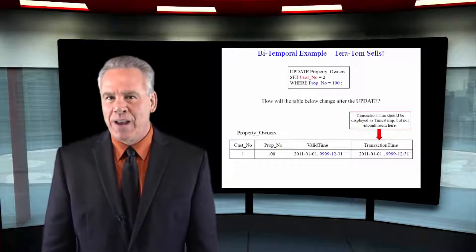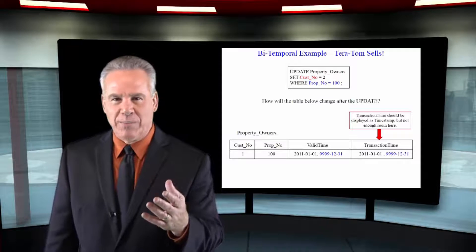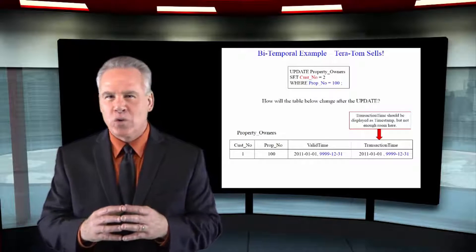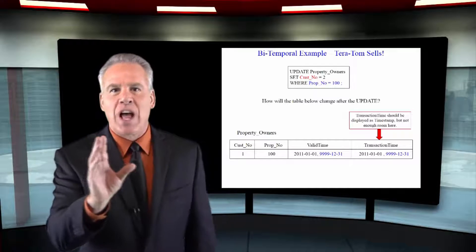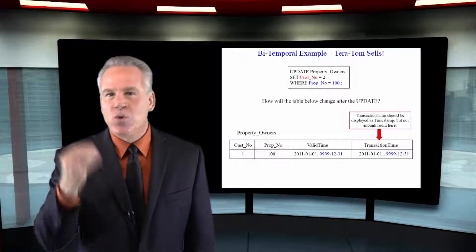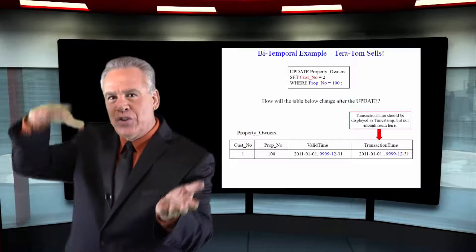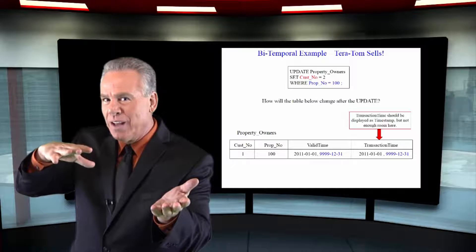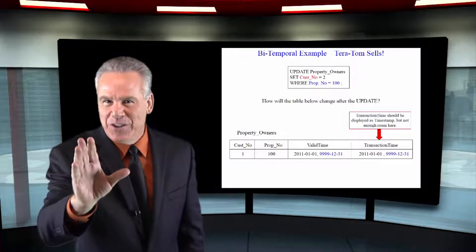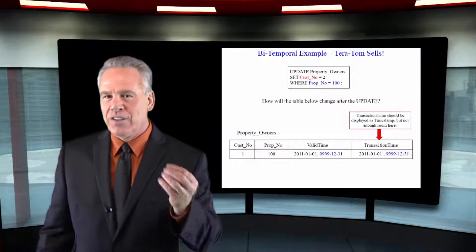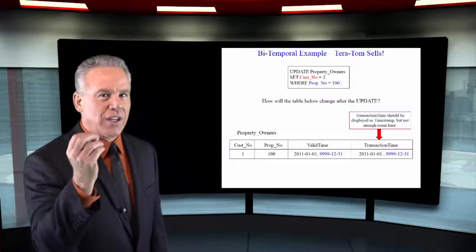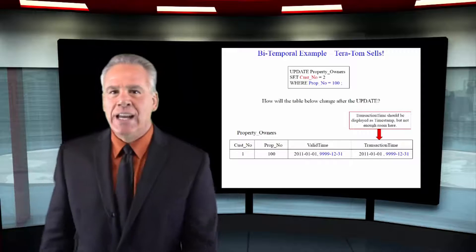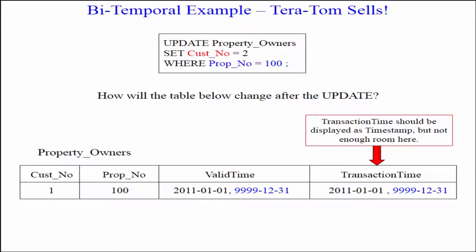One of the things about time-based tables, temporal tables, is that no rows are ever deleted. They're logically deleted. When you query them with SQL, you won't see them unless you use special SQL to see them, and you'll get a chance to see that. We're going to see this in action. I'm going to give you an explanation and a chance to guess how this is going to change. 99% of the people miss it. Let's see if you can get this.